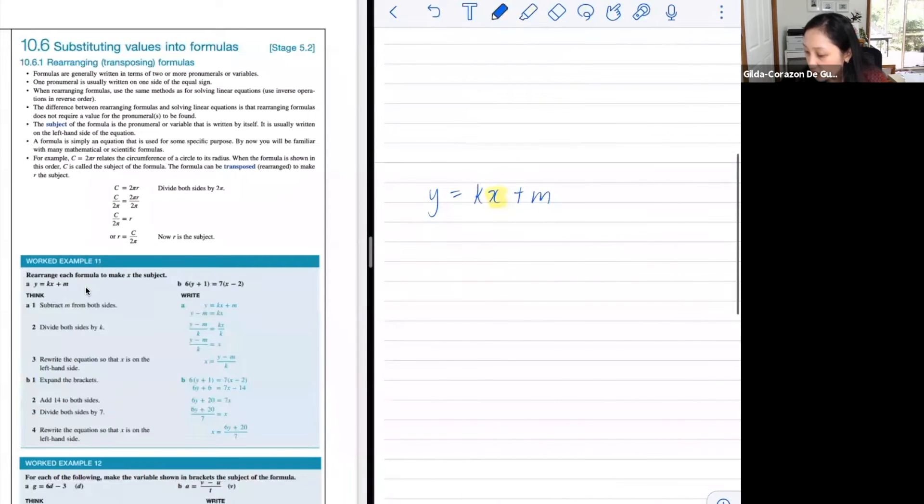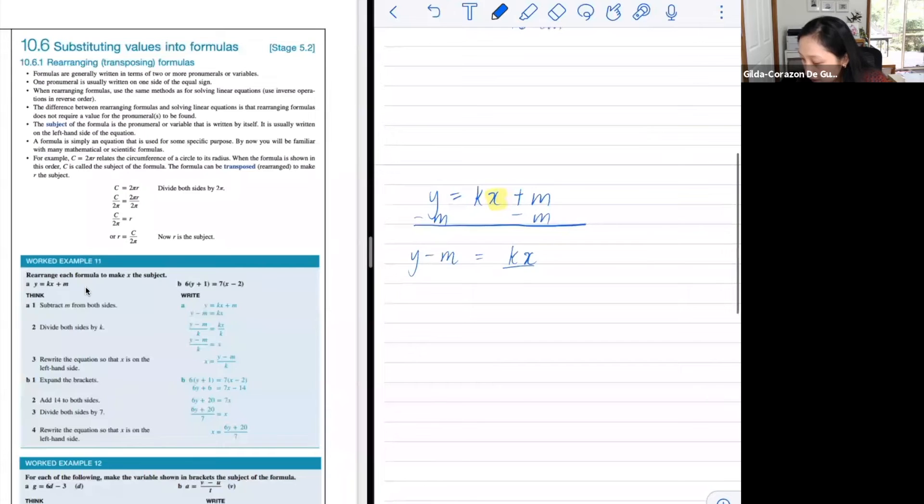What we want to do here, firstly, we would have to be doing it one at a time. So we want to minus m, and then minus m here. And on the left side, you get y minus m equal to kx. And then what? kx means k times x, and we want to divide by k. And therefore, we've got x equals y minus m over k.